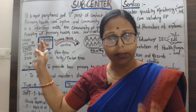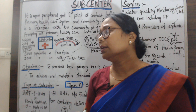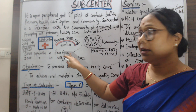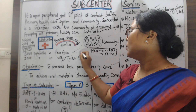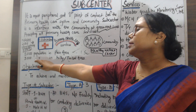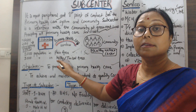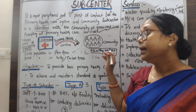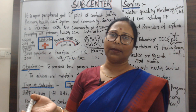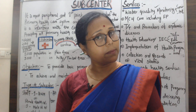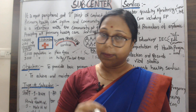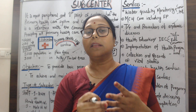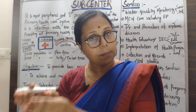In terms of population coverage, one sub-centre is established for approximately 5,000 population in the plain area, and one sub-centre for 3,000 population in tribal or remote areas. The purpose of this sub-centre is to provide promotive health services, preventive health services, and curative health services. Those are the three main purposes of the sub-centre.